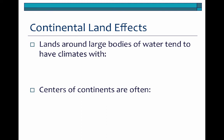A good example of this again is the Great Basin, because it has rain shadow effects both to the west and to the east.